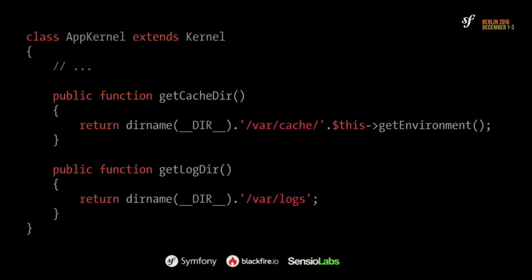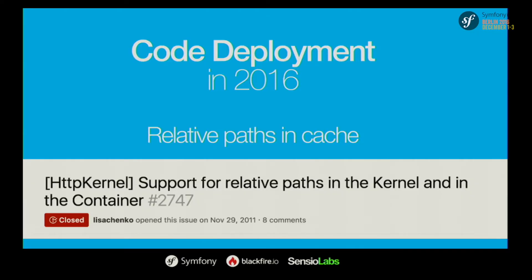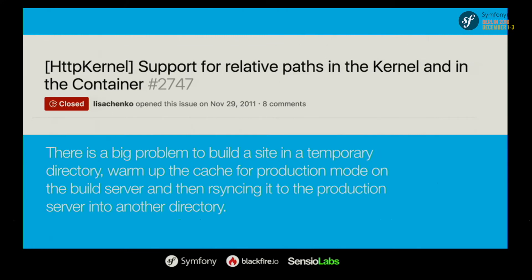Since day one you can configure the cache and logs directories directly in your kernel class, so you can move them somewhere more practical. But obviously that's not enough — from 2.0 until 3.2, Symfony used absolute paths in the generated code. The very first issue requesting removal of absolute paths from the cache was filed in 2011 — more than five years ago, actually exactly five years ago, November 29th. It wasn't really about PaaS or the cloud; it was about building in a temporary directory, warming up the cache on the build server, and then rsync'ing to production where the cache wasn't built in the same directory.